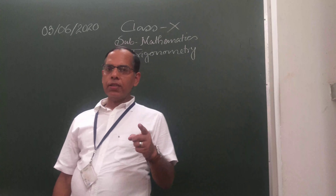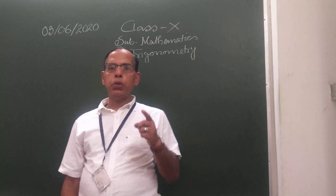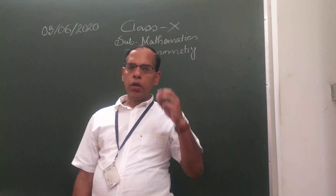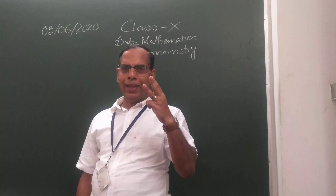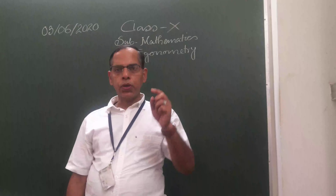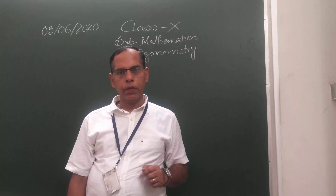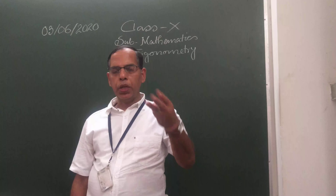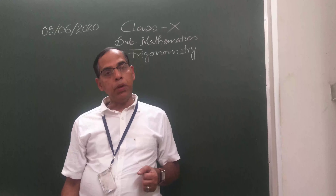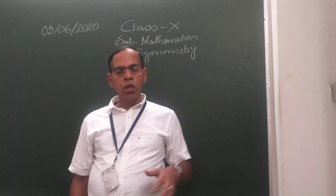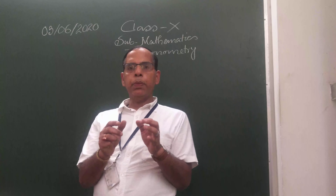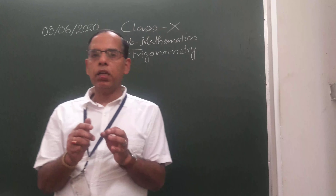On the very first day, we came to know the meaning of the word Trigonometry. The word came from three Greek words: tri, gon, and materia. Tri means three, gon means sides, and materia means measurement. So if we combine all three words together, that means measurement of three sides of a triangle.